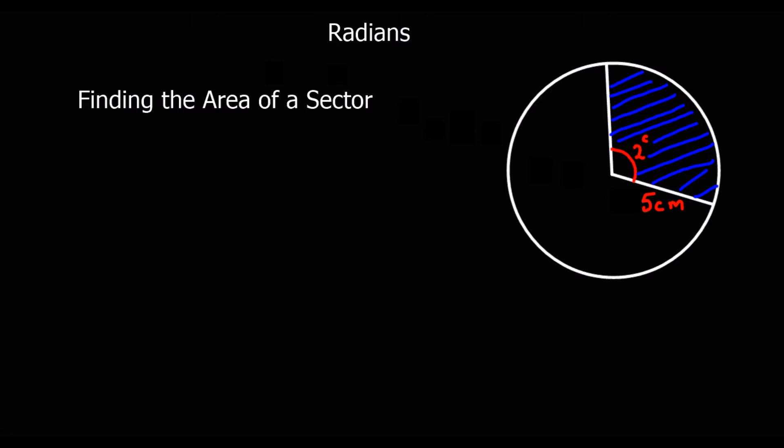Now we're going to look at finding the area of a sector using radians. The area of a sector is part of the area of a whole circle. So we look at what angle we've got, what fraction of the whole circle. If we call our angle theta, the fraction of the whole circle is theta out of two pi, because there's two pi radians in a whole circle. So it's this fraction of the area of the whole circle, which is pi r squared.